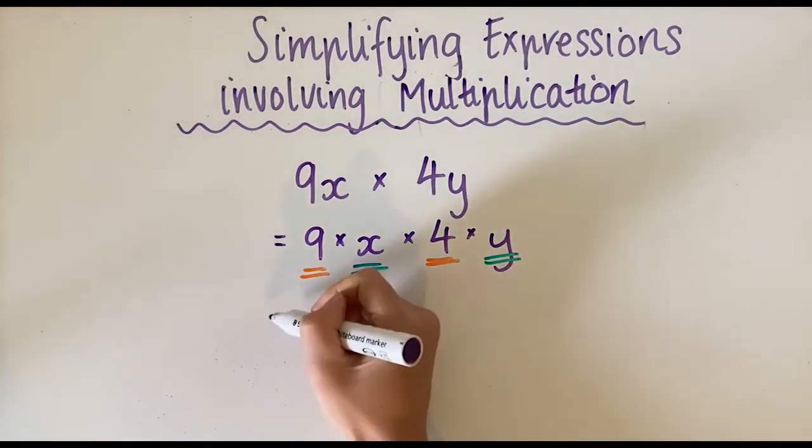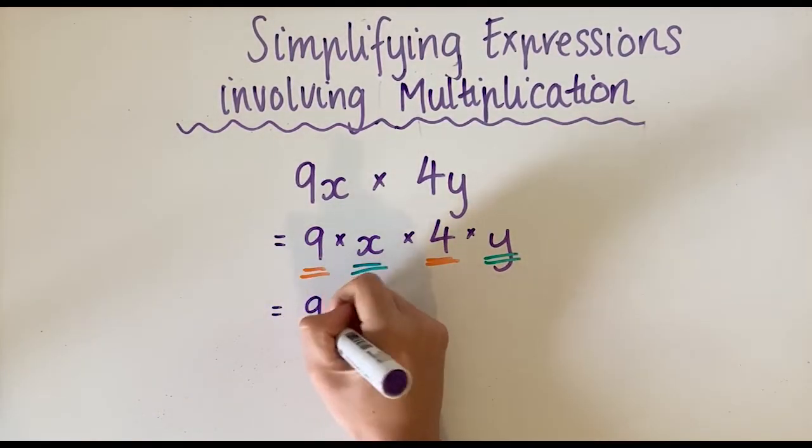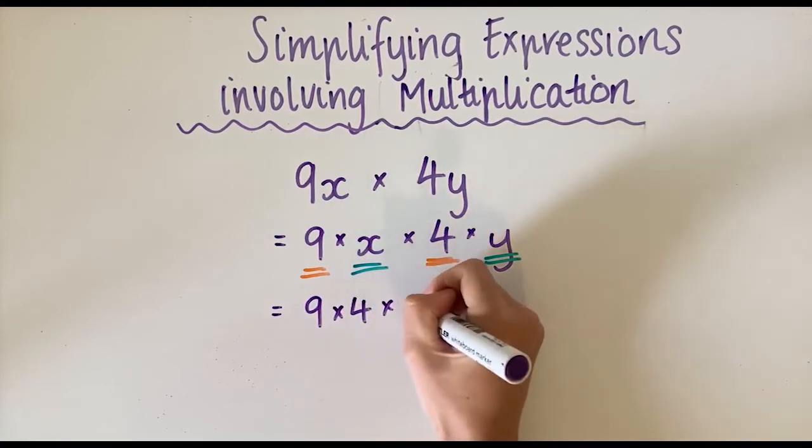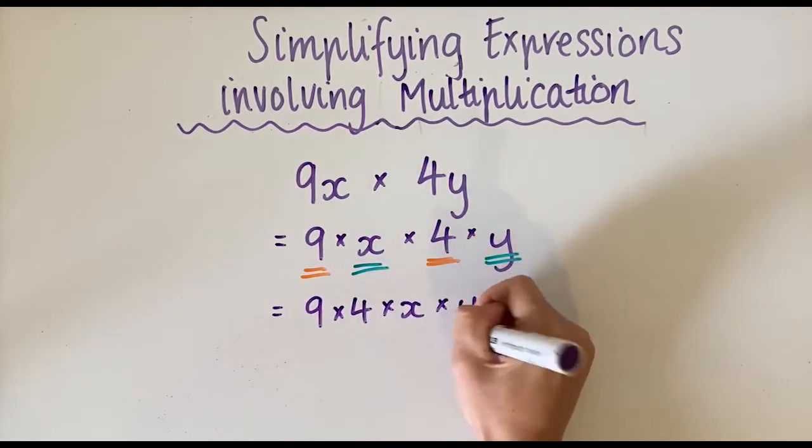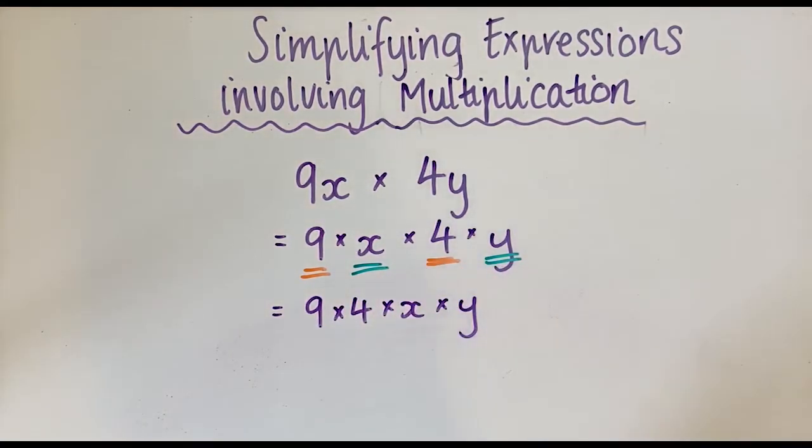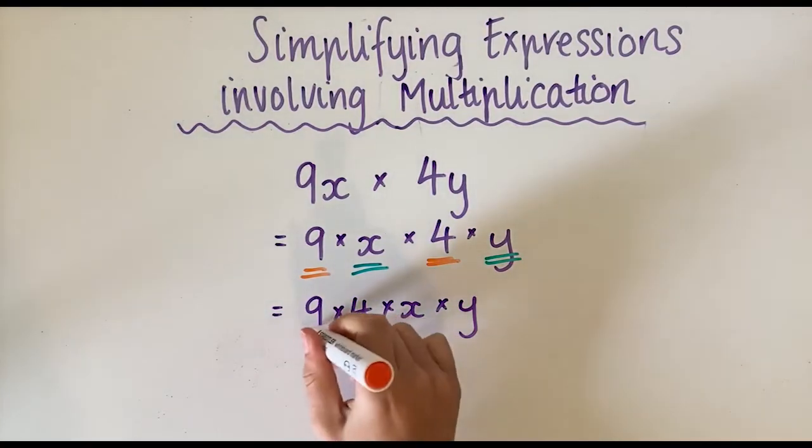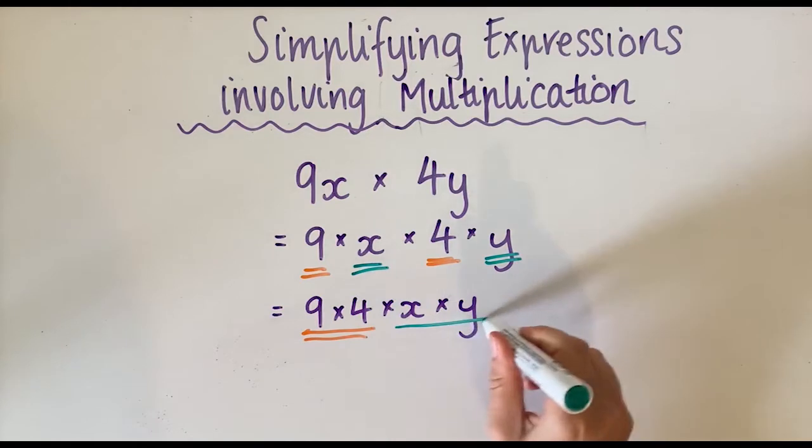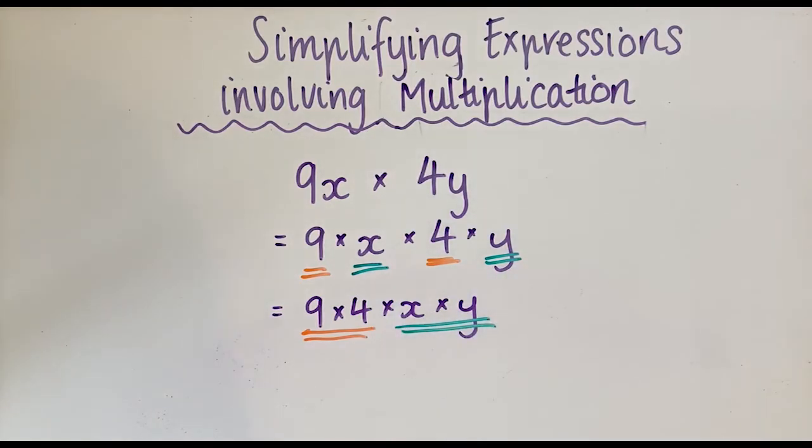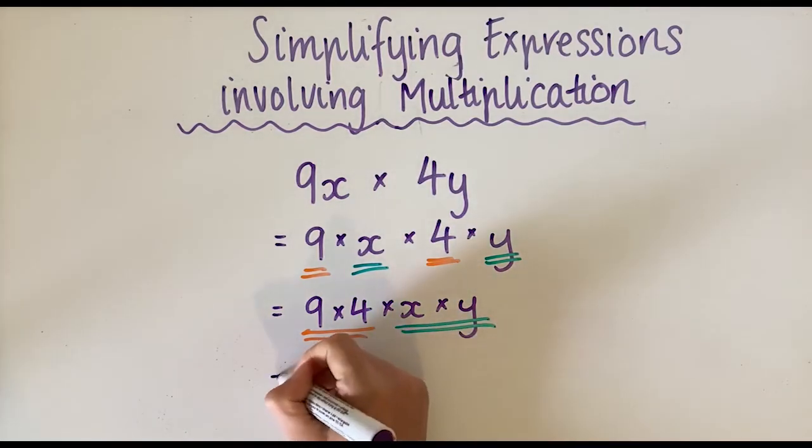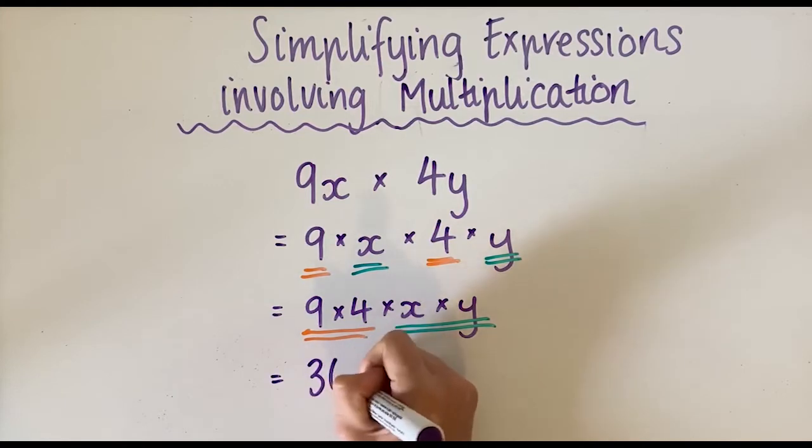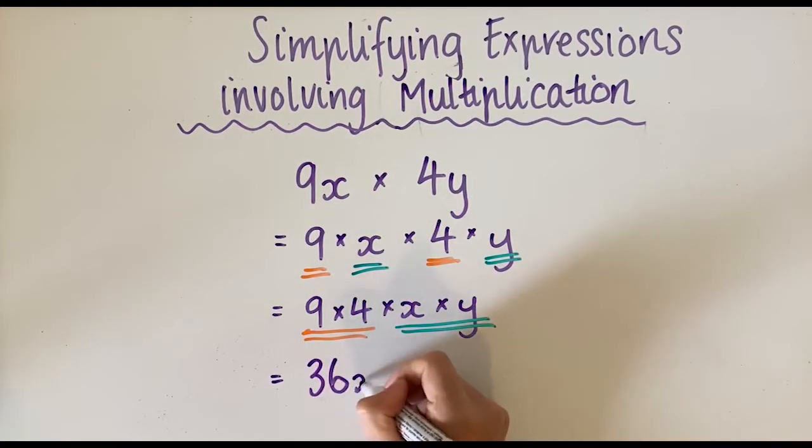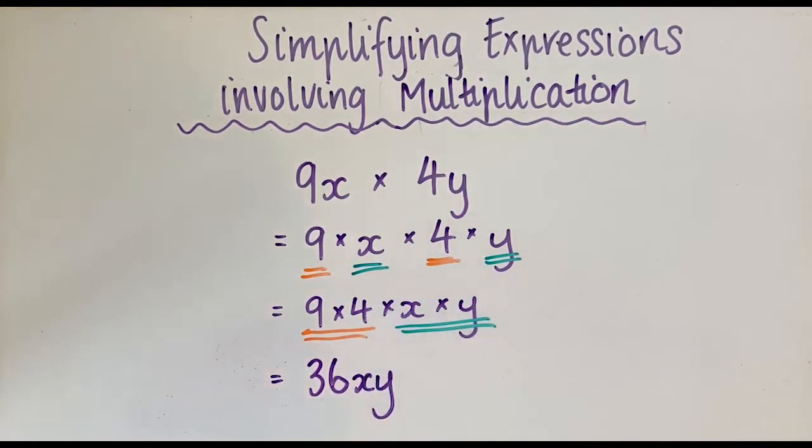Now we can rewrite this if you want to. You could go 9 × 4 × x × y. You don't have to do this step if you know a more straightforward way. But essentially we're putting the numbers together and the pronumerals together. So now we can do our multiplication. 9 × 4 is 36, and then the x and y go on the end in alphabetical order.